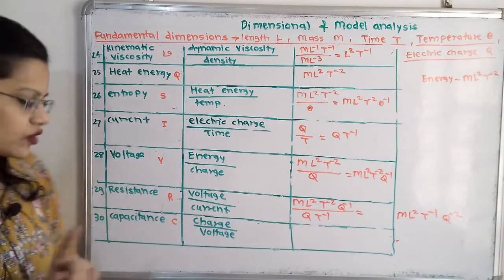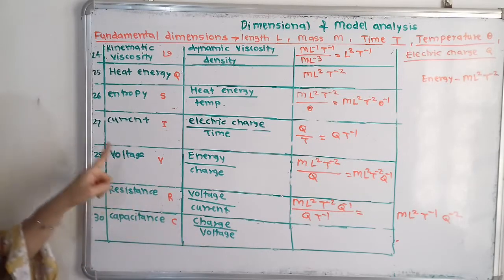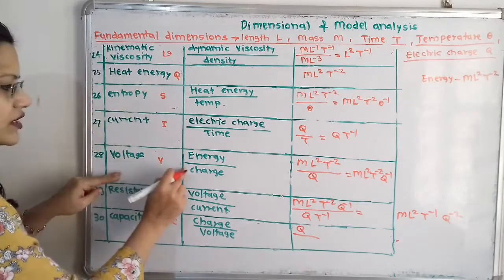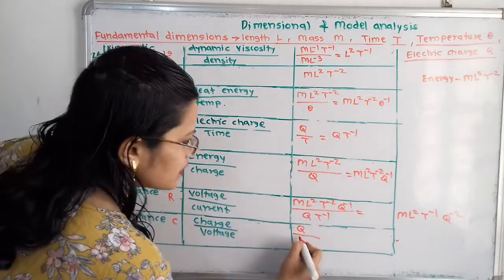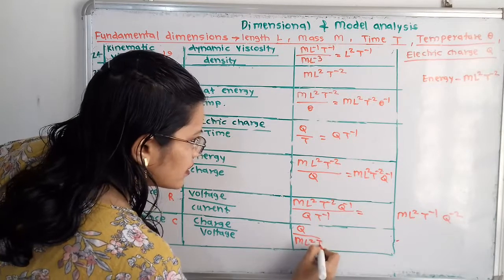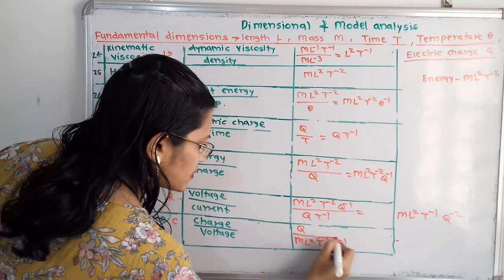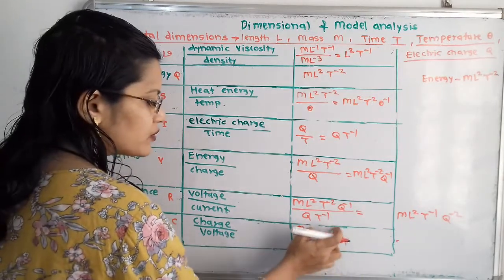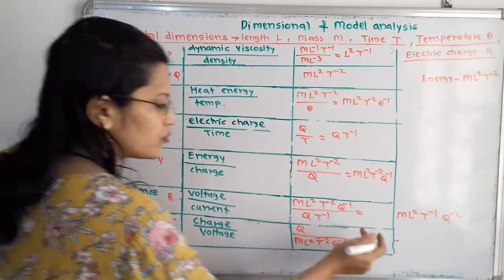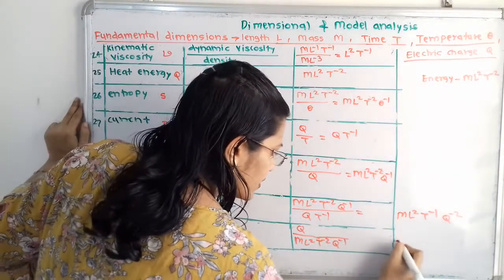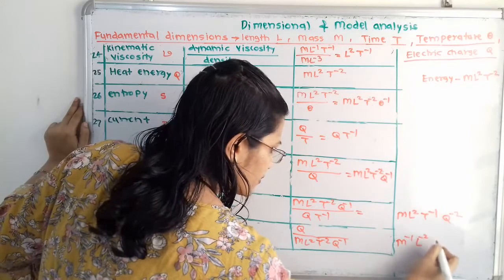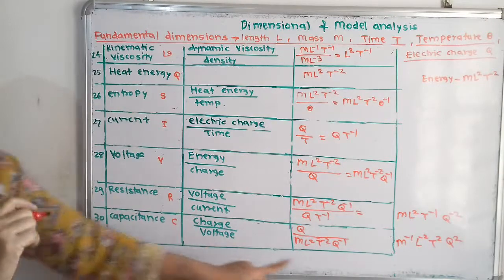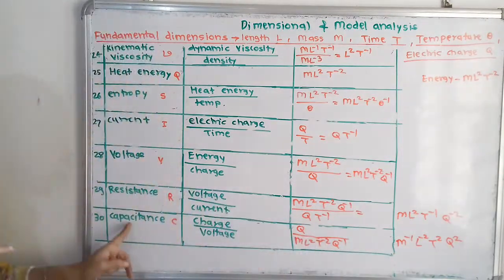Then capacitance, notation C. Capacitance is charge by voltage. Charge is Q divided by voltage, which is ML squared T raised to minus 2 Q raised to minus 1. Moving all terms to the numerator: Q combined with Q raised to plus 1 gives Q squared. The dimension is M raised to minus 1 L raised to minus 2 T squared Q squared.